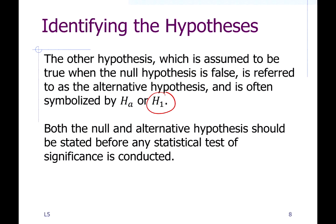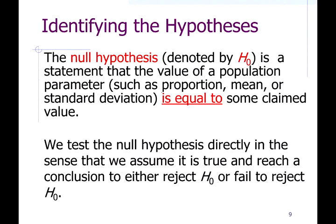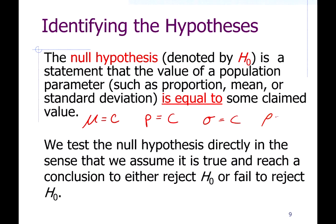This should be the beginning step of the hypothesis test: based on the claim, you state the null hypothesis and the alternate hypothesis. The null hypothesis is the easy one because it's always a statement of equality — mu equals some number, or proportion equals some number. We test that null hypothesis by assuming it's true, then analyzing the data, and our conclusion is whether or not we reject it.